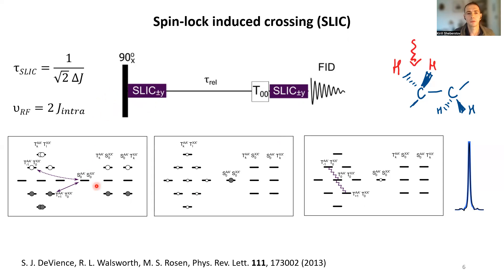You need two pulses to create long-lived states, and the heart of the sequence is the spin locking, which is synchronized with the evolution of J coupling and intra-pair and vicinal out-of-pair J couplings.